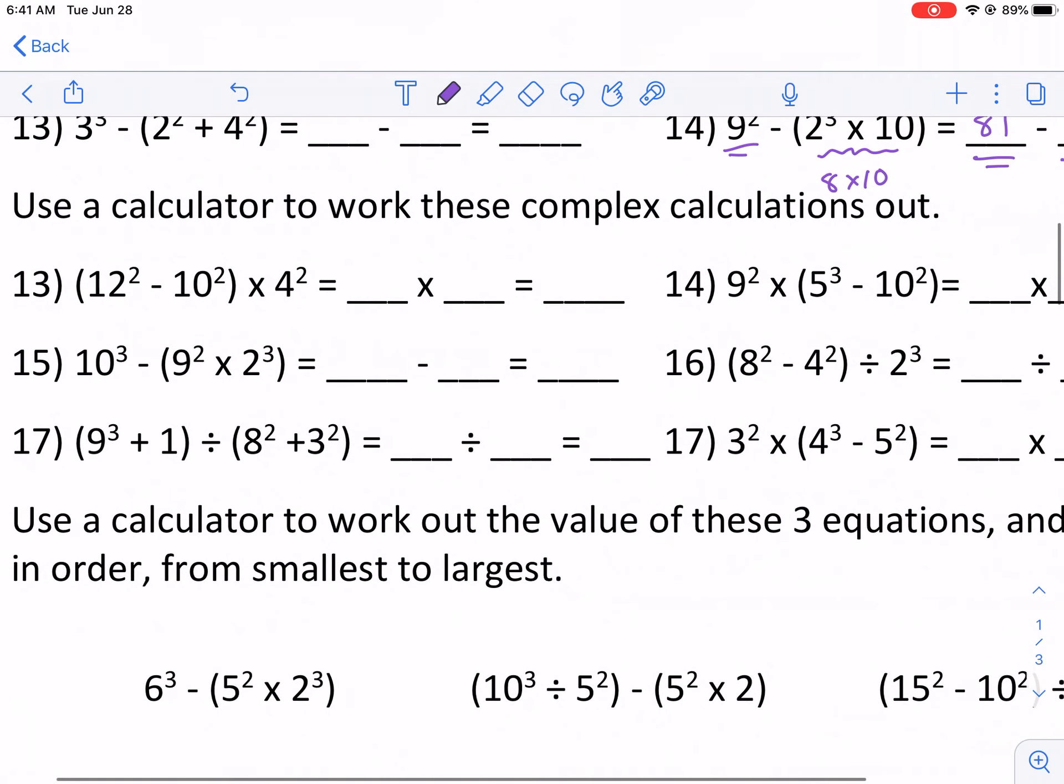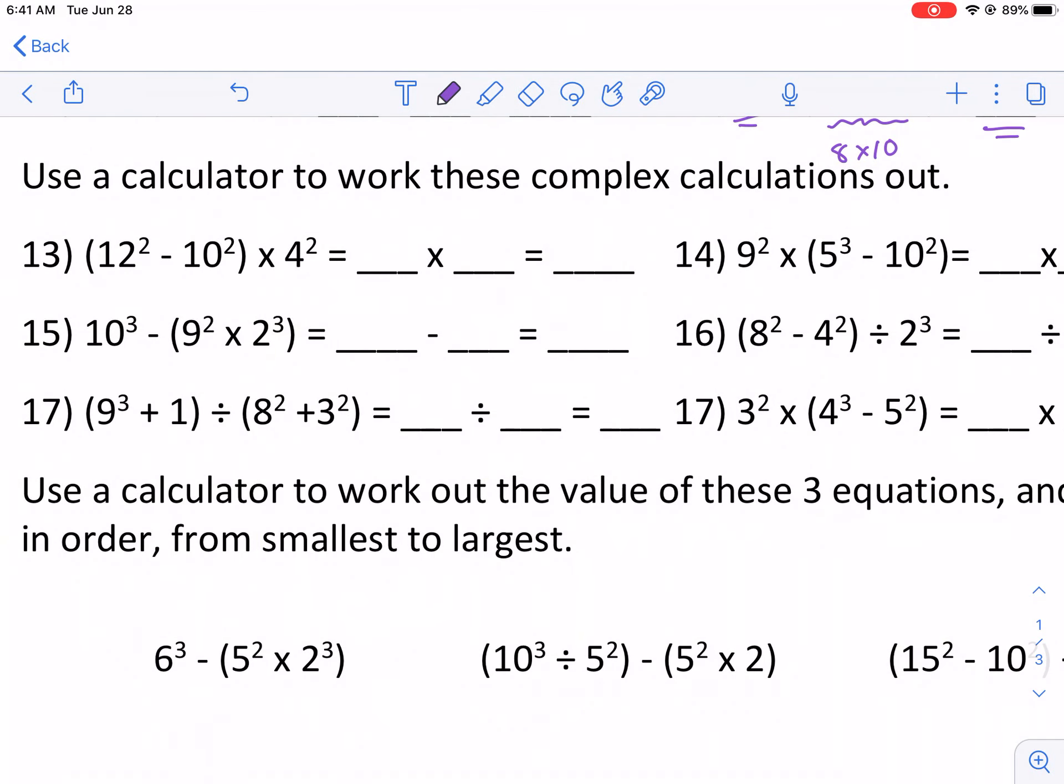So the next section is using a calculator just cause they're a little bit bigger numbers. But again, same process we're doing here. We have this parentheses first that we're going to do. So we have 100. This is going to be 144 minus 100. Those are those two squares right there. And that gives me 44. And then times, there's the times. Times, times, times 16. So, of course, that's kind of a bigger number I'm working with. Luckily, I have my calculator right handy next to me.